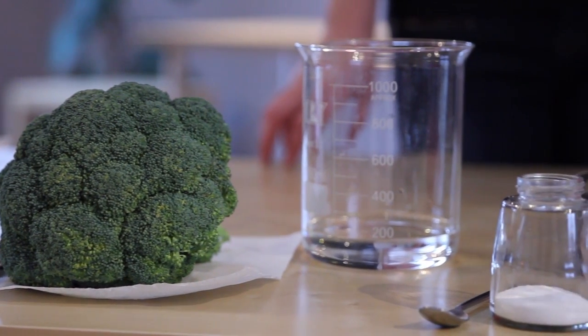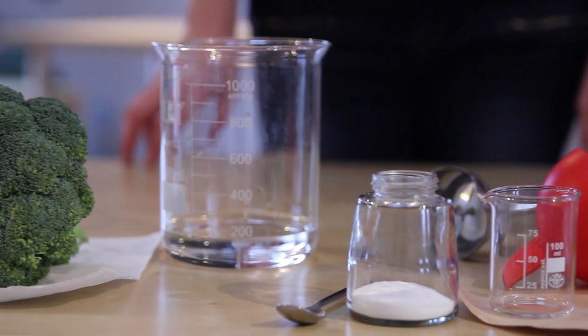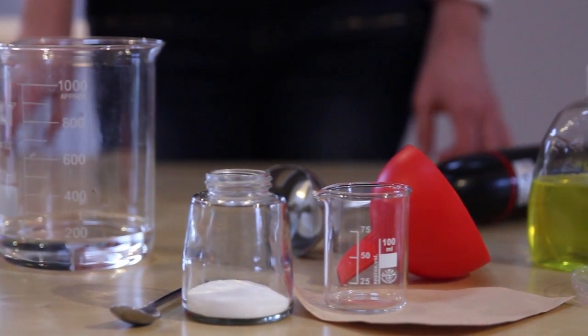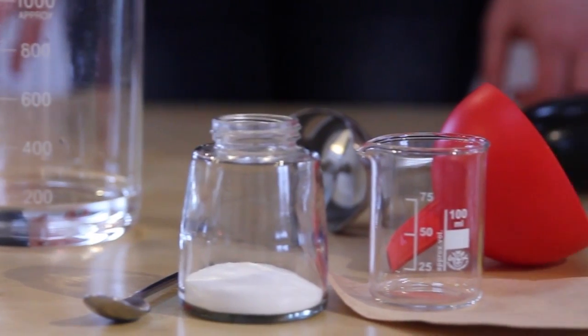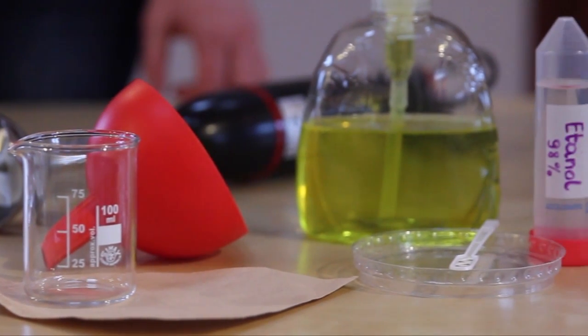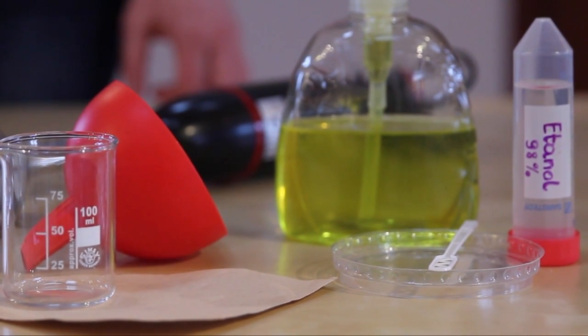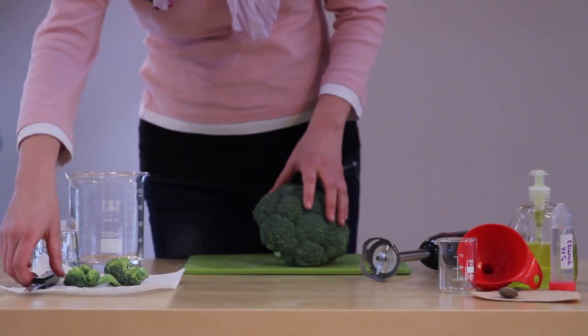Fresh broccoli, a bigger container, teaspoon, kitchen salt, a smaller container, a funnel, a blender or a knife, a coffee filter, washing up liquid, a stirrer, 10 milliliters of chilled alcohol, and about 300 milliliters of ordinary tap water.